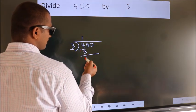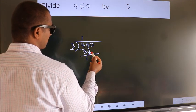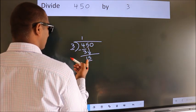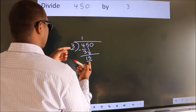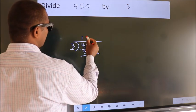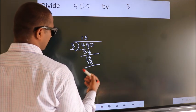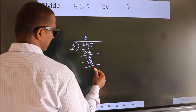After this, bring down the beside number. So 5 down. So 15. When do we get 15? In 3 table. 3 5s 15. Now we subtract. We get 0.